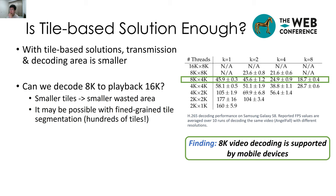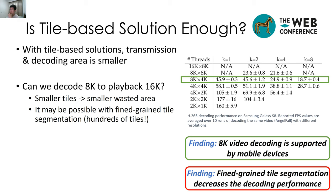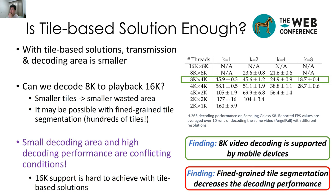But that's hundreds of tiles. The second finding is that fine-grained tile segmentation decreases the decoding performance. As we can see from the table, from left to right, the FPS is decreasing. The conclusion is that small decoding area and high decoding performance are conflicting conditions, so 16K support is hard to achieve with tile-based solutions.